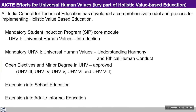One is the Mandatory Student Induction Program, in which UHV-1 is the core module. It's an introduction to universal human values, and it gets the student ready and willing to look into these values. The second part is the Mandatory UHV-2 Universal Human Values three-credit course, which is now made mandatory in the model curriculum, and universities have to take it up.